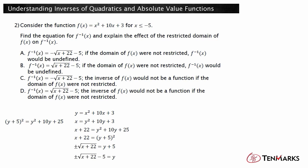The domain is restricted to x values less than or equal to negative 5. This means the range of the inverse function will be only y values less than or equal to negative 5. If the positive square root is used, it will result in y values greater than negative 5. So only the negative square root can be used. Therefore, f inverse is negative square root of the quantity x plus 22, minus 5.